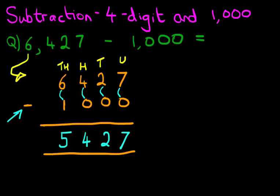And we have our answer. 6,427 minus 1,000 is 5,427. That is correct. Let's give it a nice big tick.